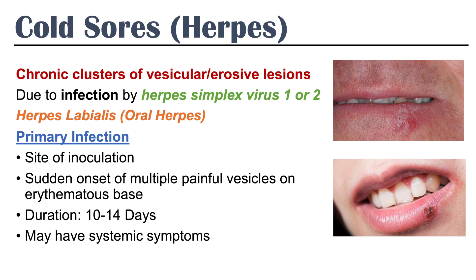The primary infection may have systemic symptoms. This can include fever or chills, malaise — you just may feel very under the weather with this.